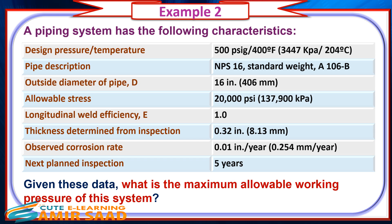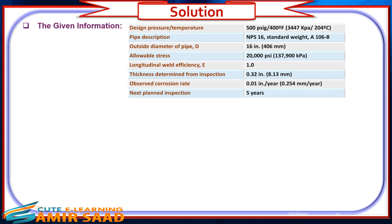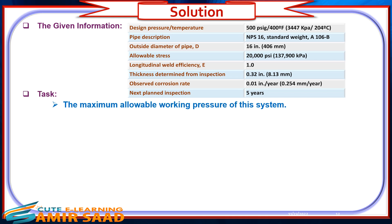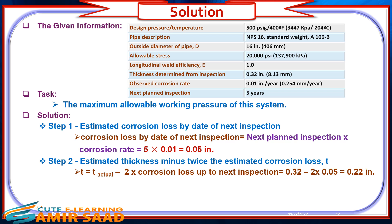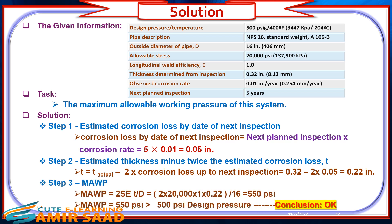Example 2: A piping system has the following characteristics as shown on the table below. Given these data, what is the maximum allowable working pressure of this system? Solution: Step 1 — Calculate the estimated corrosion loss by date of next inspection. Step 2 — Calculate the estimated thickness minus twice the estimated corrosion loss. Step 3 — Calculate MAWP. The result is MAWP equals 550 PSI, which is greater than design pressure. Conclusion: OK.